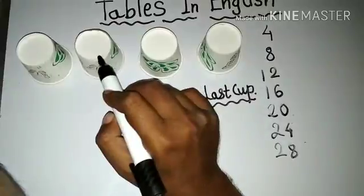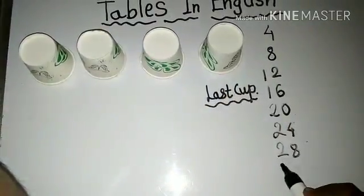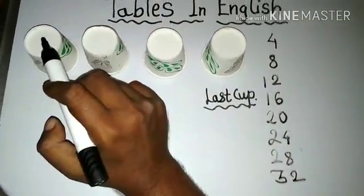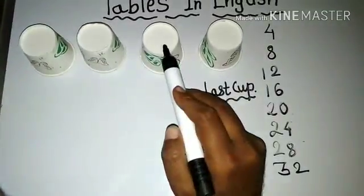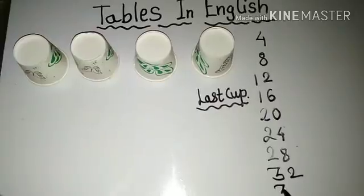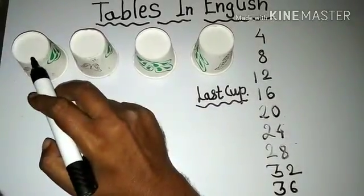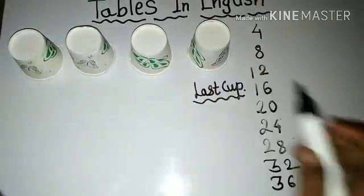Continuing: 29, 30, 31, 32. Then: 33, 34, 35, 36. And finally: 37, 38, 39, 40.